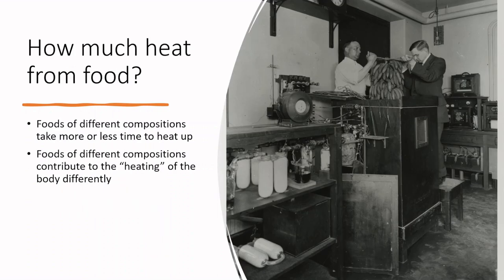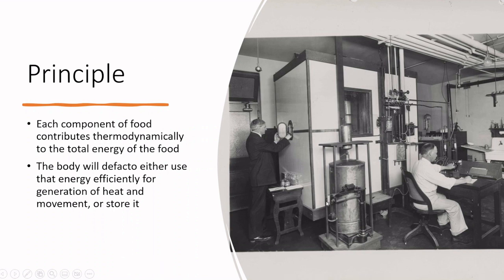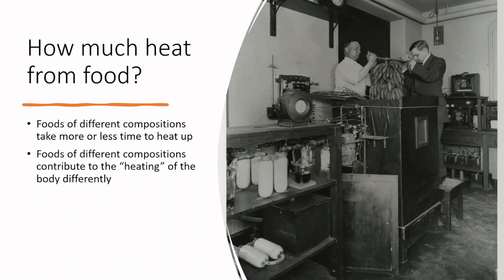Atwater spent a lot of time measuring food energetics. One of his metabolic units looks like a small box, but a person could be inside it. A person could be given a certain food product, and the change in the atmosphere could be measured very precisely to see what was happening thermodynamically within that metabolic box. You could feed people different food products, give them different activities, and evaluate the energetics. Here they're measuring a bundle of bananas using that same principle.